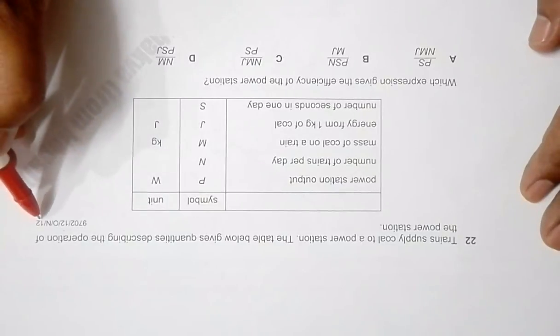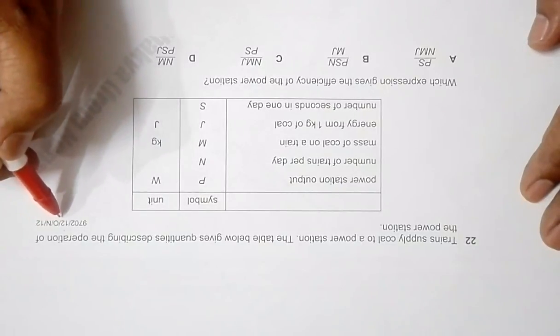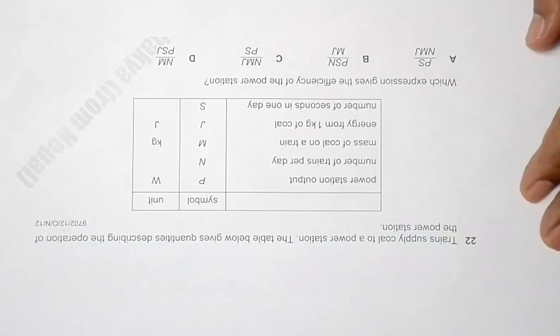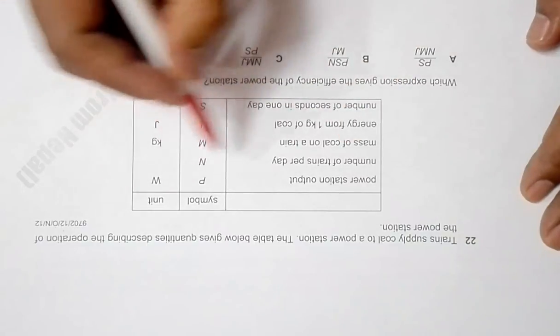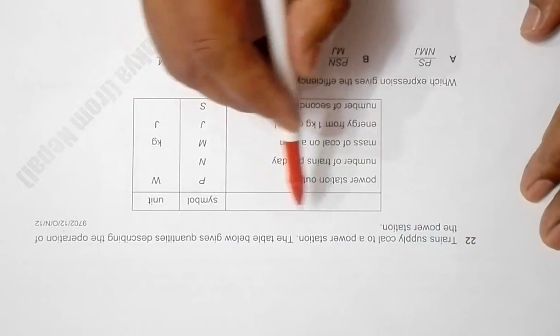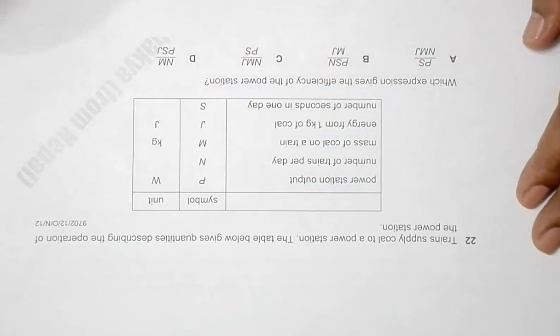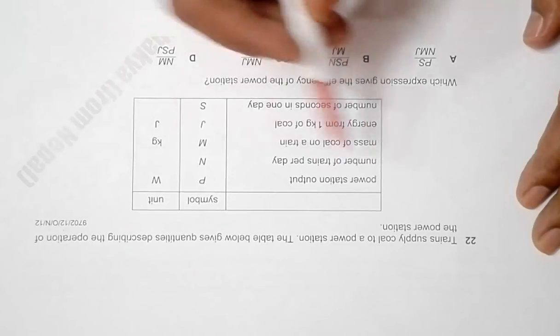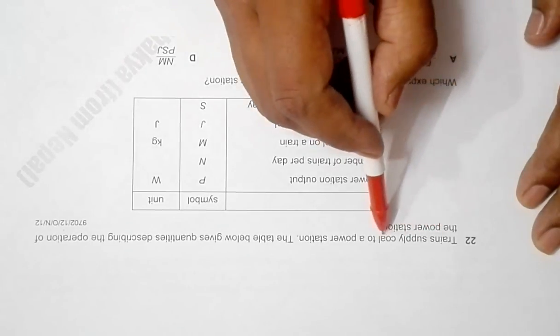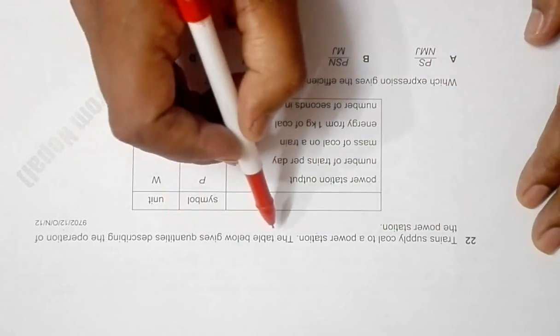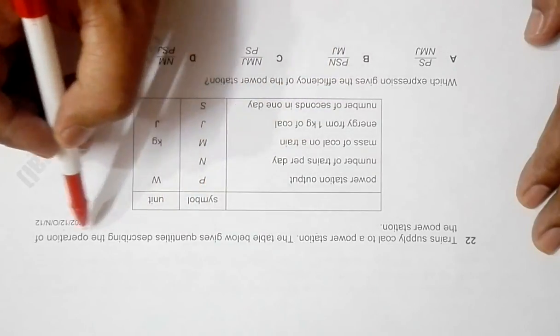This is 2012 October-November Paper 1-2, question number 22. It's a bit of a complex question and makes full use of the unitary method that we learn in secondary level mathematics. It says trains supply coal to a power station, and the table below gives quantities describing the operation of the power station.